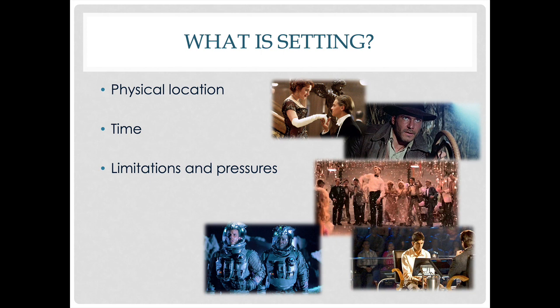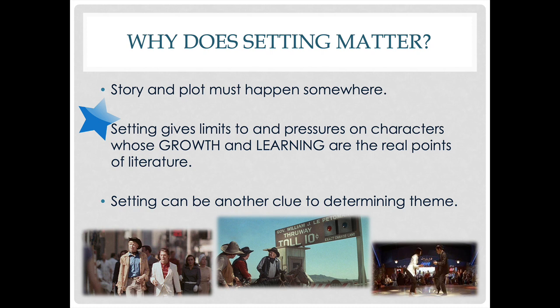When we talk about setting in literature, we are talking about three items: the physical location that a story is taking place in; the time that the story is taking place in — which could be an actual date like 1945, but also the length of time of the story, such as this story takes place over one hour or, as in Harry Potter, over seven years; and then the coolest part of setting, what we call limitations and pressures.